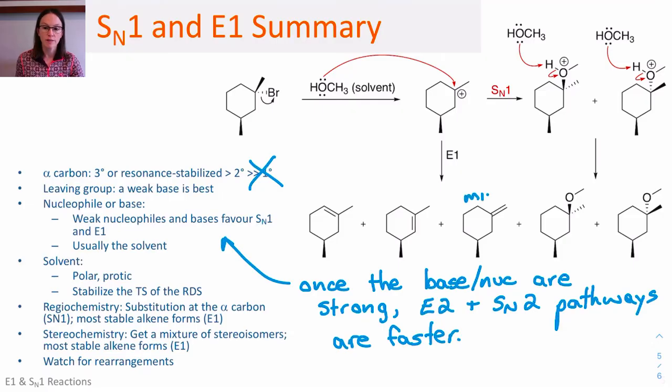In terms of regiochemistry, for the SN1, we get substitution at the alpha carbon. In the E1 reaction, it's the more stable alkene that forms.